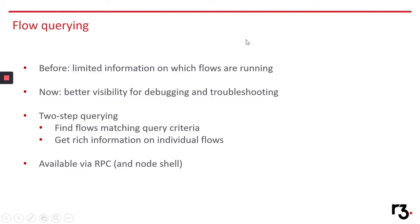The first one is the possibility to perform advanced queries on flows. In earlier versions of Coorda, you were limited to a very small amount of information on the flows that were running and active on your node. Now we give you a lot better visibility for any debugging, troubleshooting, or monitoring you might have to do on the flows happening on your node. This is done in two steps through a couple of new APIs, which I'm going to demonstrate in a few moments.